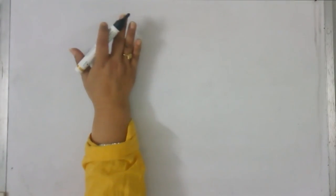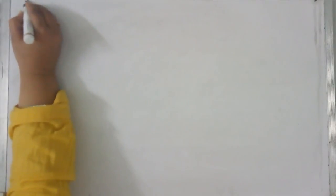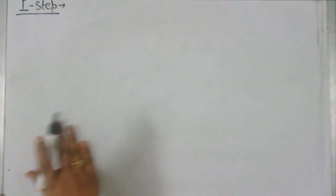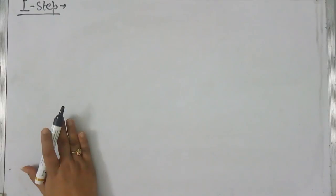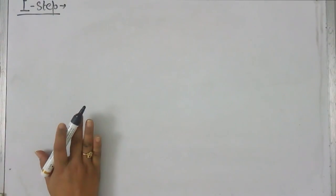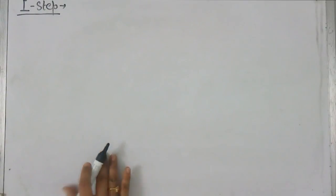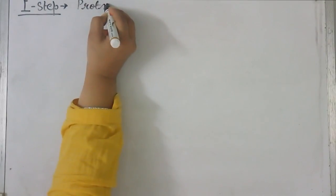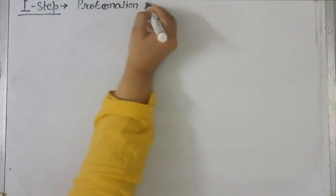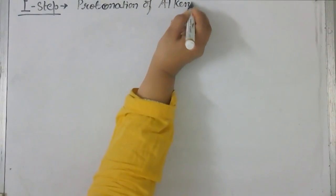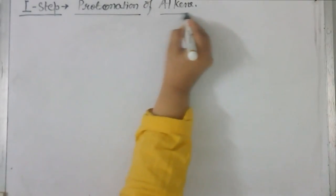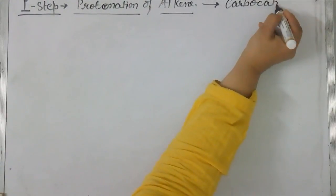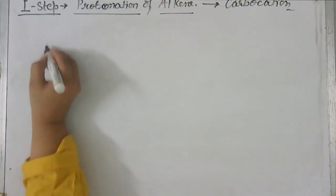Okay students, let us start with the mechanism of this reaction. We can study the mechanism in three steps. I'm starting with the first step. This first step is the rate determining step of this reaction. The rate determining step of any reaction is that step which is the slowest one out of all the steps. So this first step is the protonation of alkenes which will give you the formation of carbocation. Let us see how it happens.